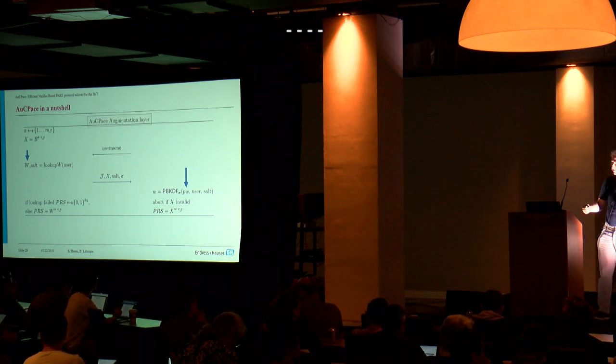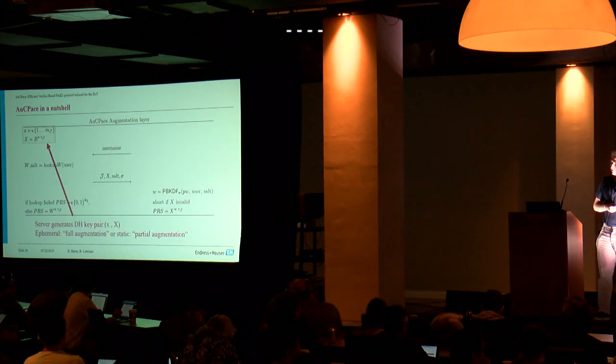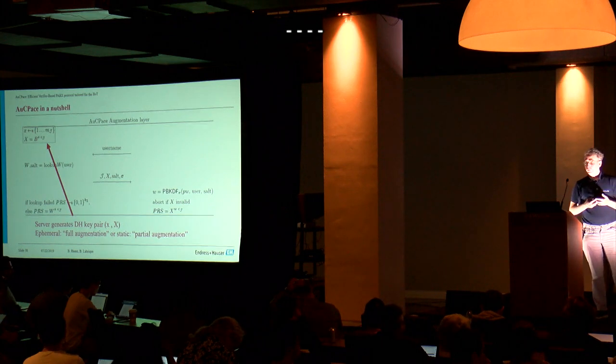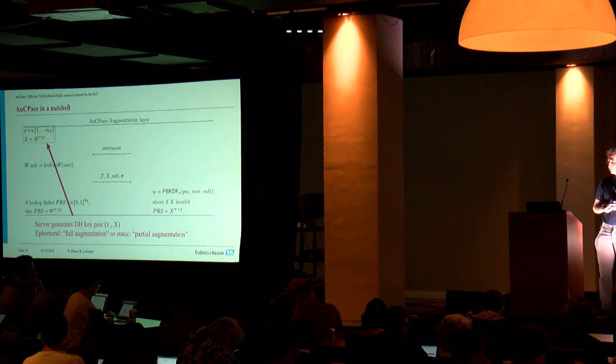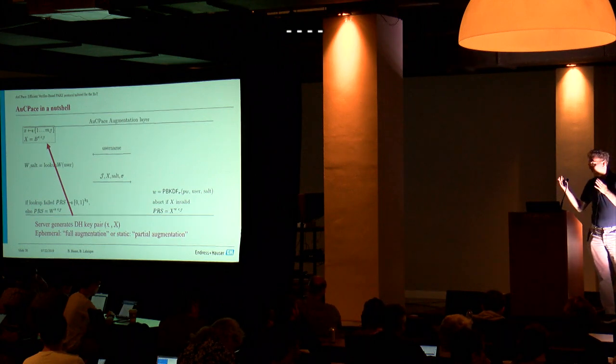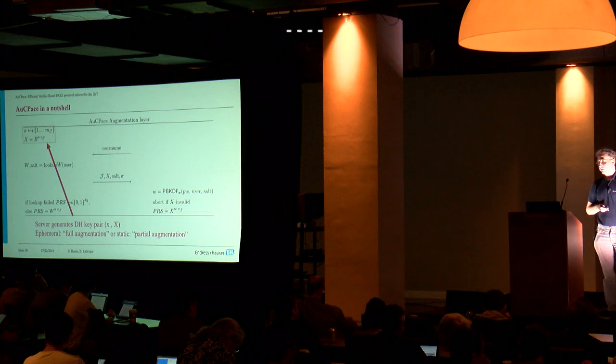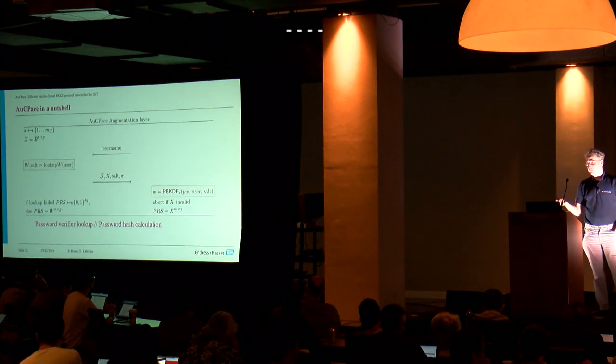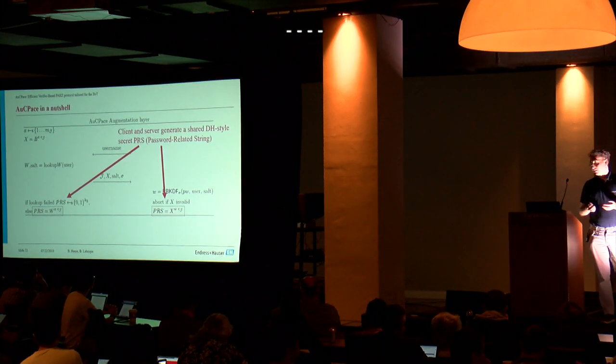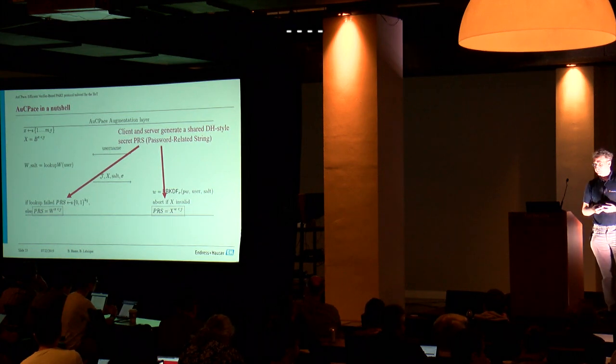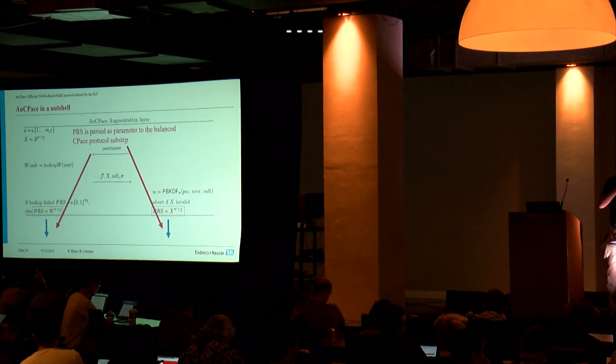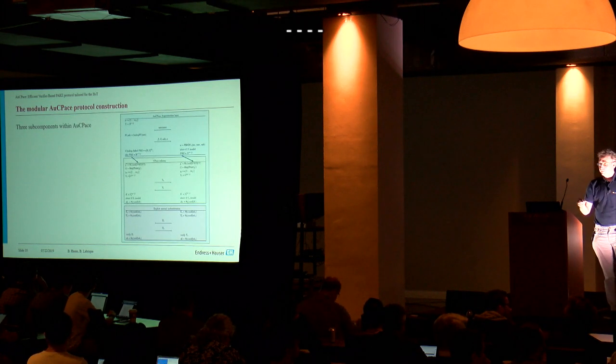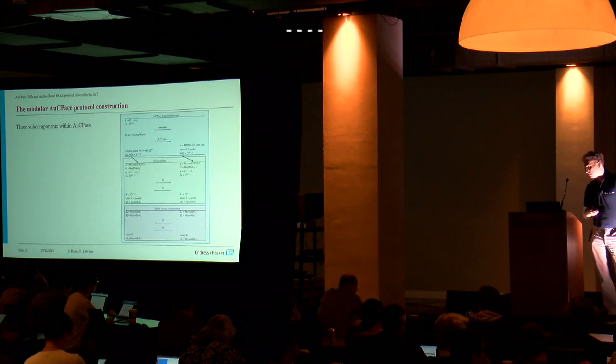For establishing a session key, we start the protocol on the client side with a clear text password and the verifier on the service side. The augmentation layer, which precedes the balanced PAKE protocol, consists of where you generate a key pair on the service side, which might be of ephemeral or of long-term type. Username and password have to be exchanged. We calculate the password, look up the password verifier in the database and calculate the password hash and calculate a Diffie-Hellman-style secret, which we call password-related string PRS.